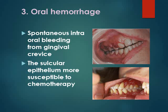Oral hemorrhage: as mentioned earlier, there is spontaneous bleeding from the gingival crevice because the gingival epithelium is more rapidly dividing and therefore more affected by chemotherapy. The patient also has a tendency for spontaneous bleeding due to thrombocytopenia.